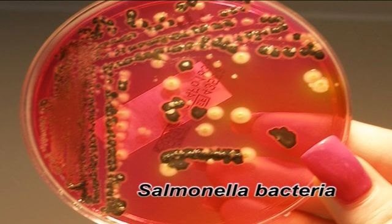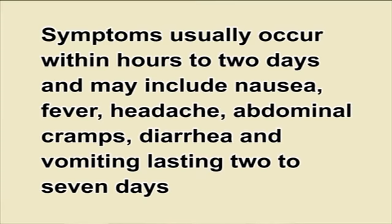Types of foodborne diseases. These are the different types of foodborne diseases commonly causing health problems. Salmonella bacteria may cause food poisoning when contaminated meat, poultry and eggs are eaten raw or undercooked, or when foods come into contact with contaminated foods during preparation. Symptoms usually occur within hours to 2 days and may include nausea, fever, headache, abdominal cramps, diarrhea and vomiting lasting 2–7 days.